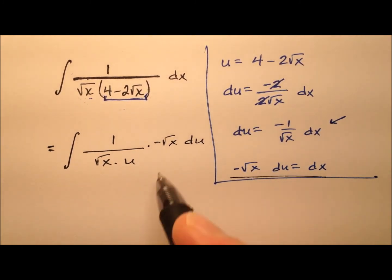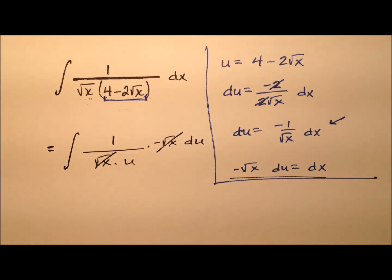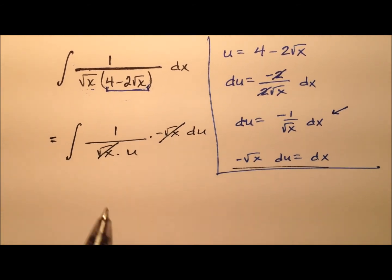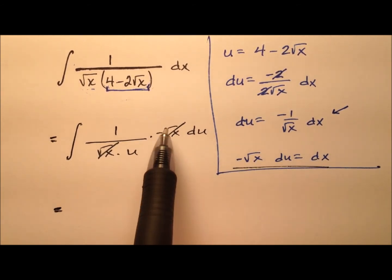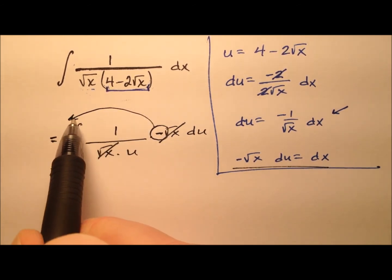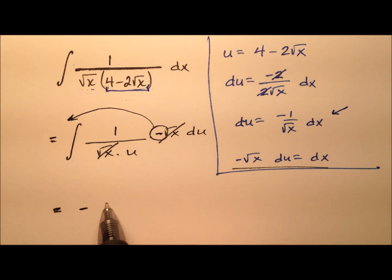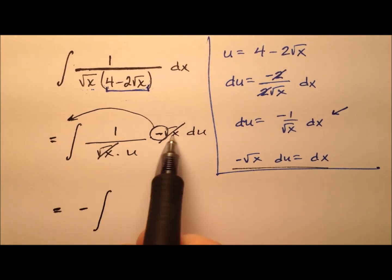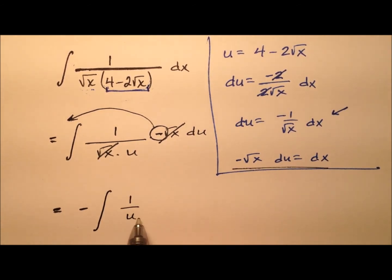And we'll see those square roots of x's cancel very nicely. So we have this negative here that we could just bring out front as a constant. So the opposite of the integral looks like just 1 over u du is what we're left with.